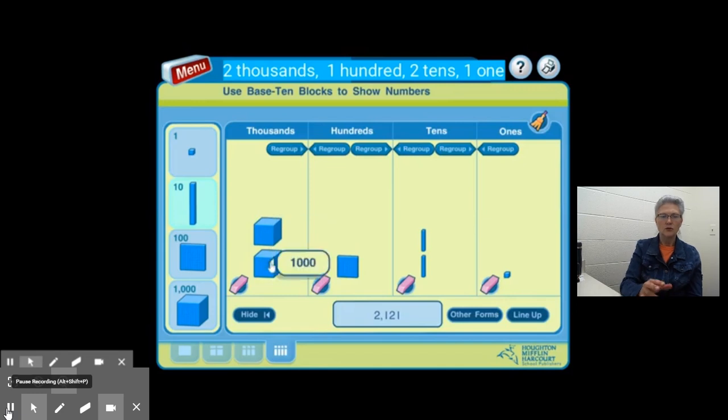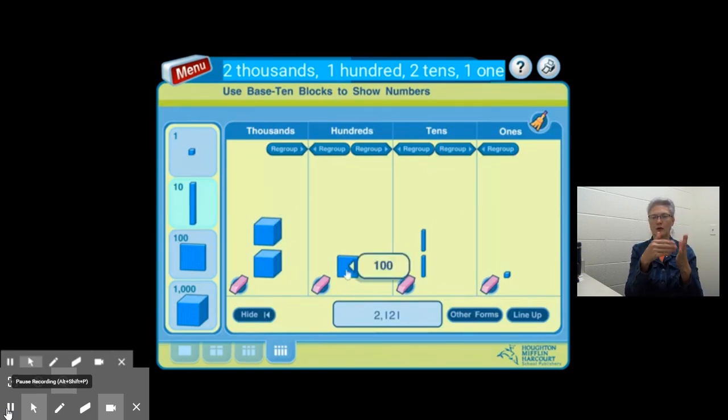We have two big cubes. Each of them represents 1,000, so we have two thousands. We have one flat, which is 100. We have two longs. Each of them has a value of 10, so we have two tens, or 20, and we have one small cube, which represents 1.